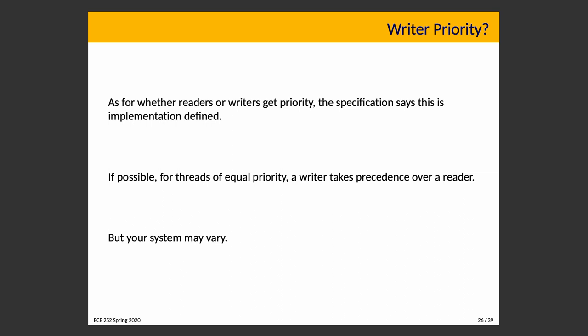As for whether readers or writers get priority, the specification says this is implementation defined. The spec says as a goal that for threads of equal priority, a writer takes precedence over a reader. You can get priority given to your writers by giving them higher thread priority in their thread attributes — but your system may vary and might choose not to respect that. So if you truly need writers to always have priority over readers, you might actually have to implement it yourself and can't use this type.